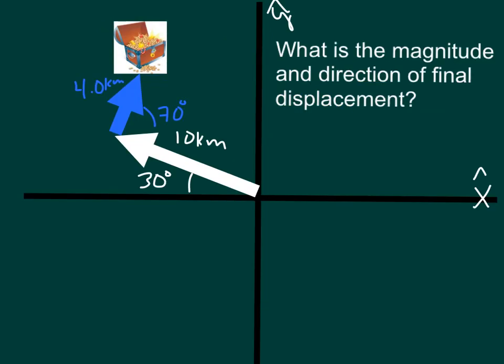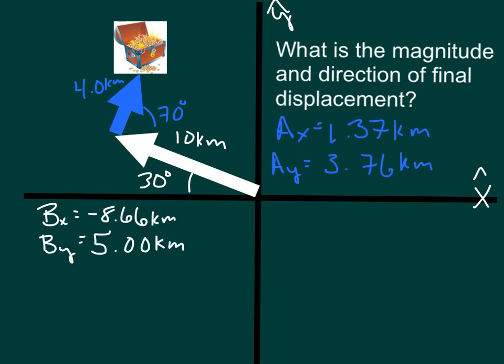For the last example to check your understanding, we're going to hunt for the pirate treasure of Captain Mathbeard. He or she buried the pirate treasure 10 kilometers 30 degrees north of west and then 4 kilometers 70 degrees north of east. So what I want you to do is to break these two vectors into components. Pause the video, try it, and in a couple seconds we'll compare answers. So hopefully these are the answers you've got. If not, go back and check your work or feel free to ask me about these questions. More than happy to help.